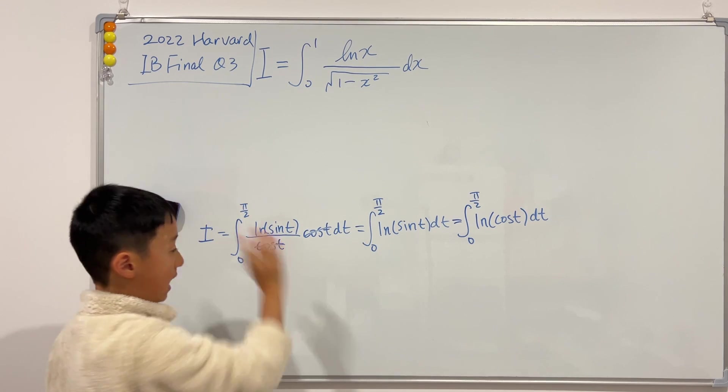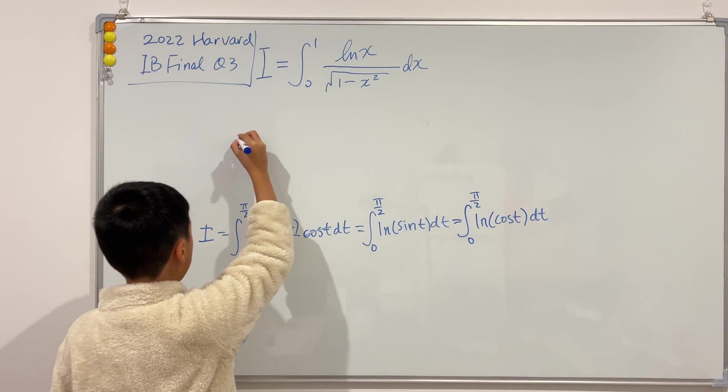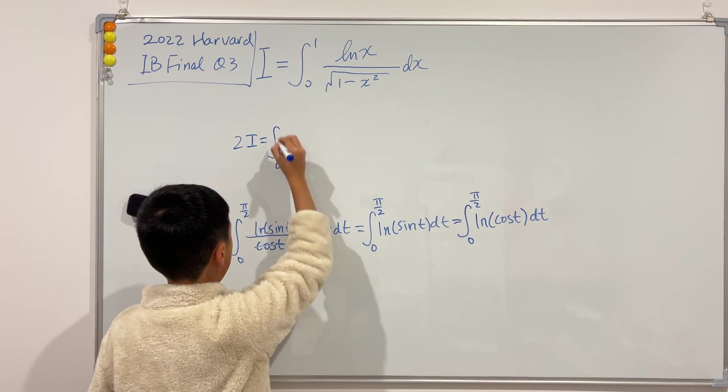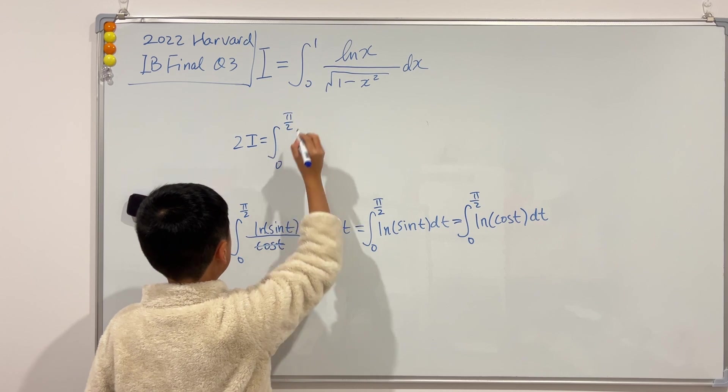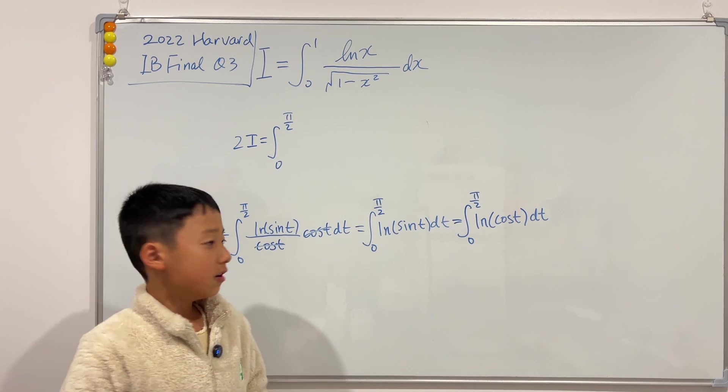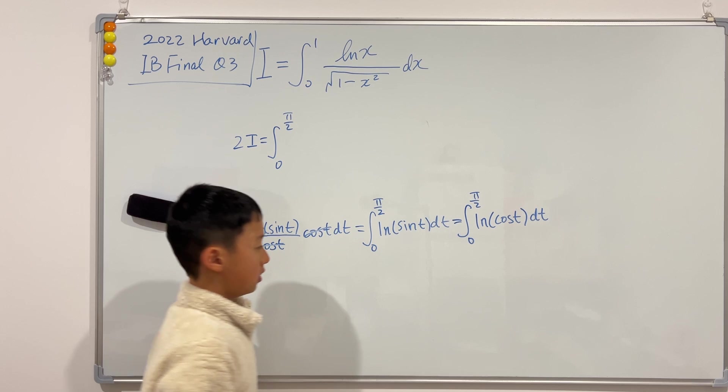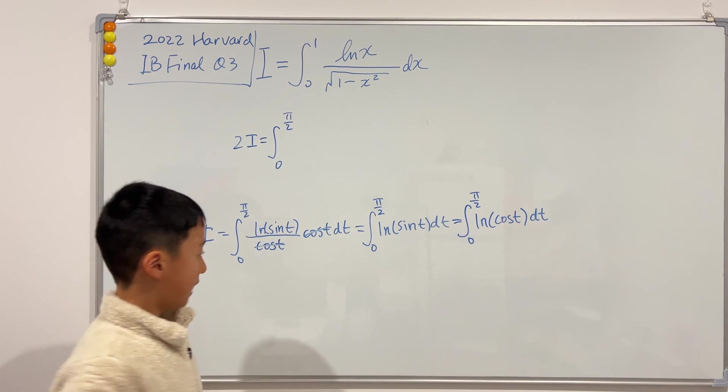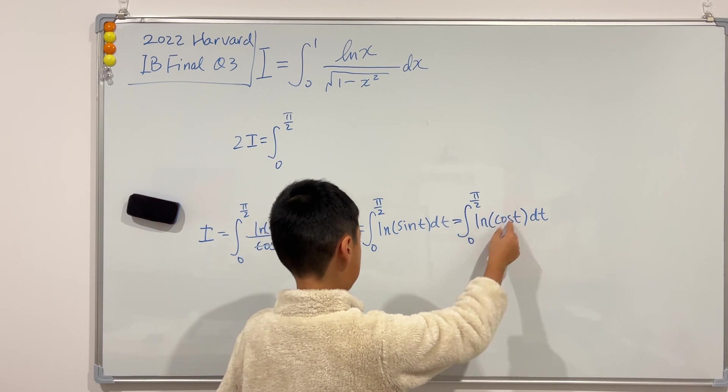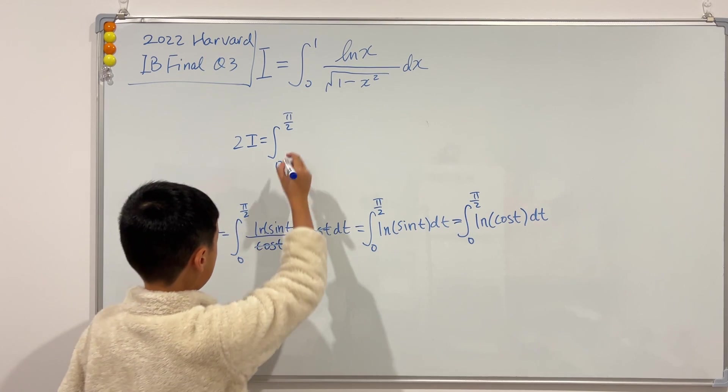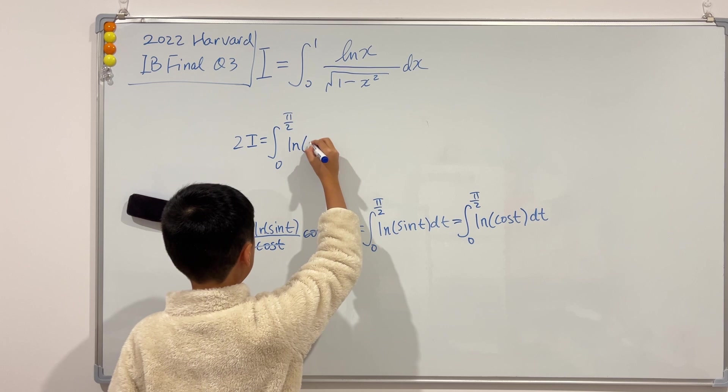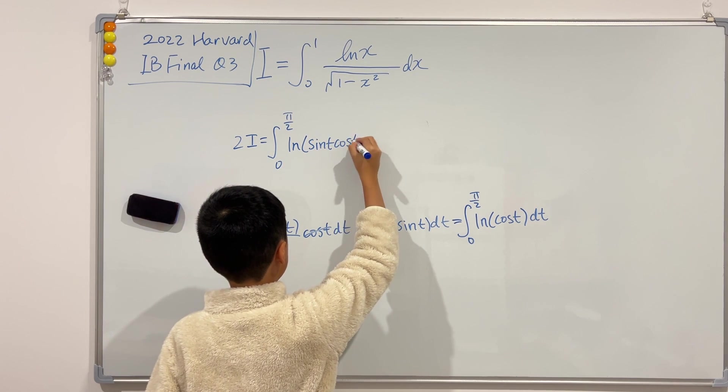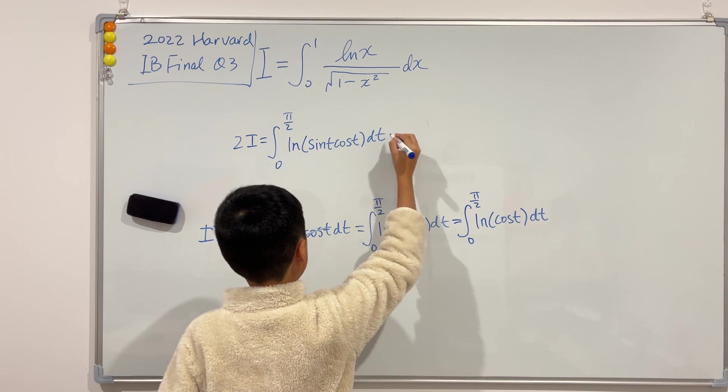So then, if we add them up, then we see that 2i will be equal to still the integral from 0 to π over 2 of... We see that if we add two ln, then we know that it's just equal to one single ln, but the inside is sine t times cosine t. So ln of sine t cosine t.